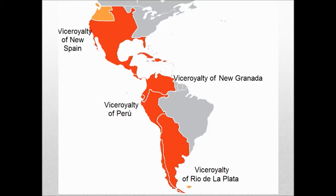The vice royalty of Peru once encompassed most of Spanish-held South America, but it was later subdivided in the 18th century into two additional vice royalties. The vice royalty of Peru corresponded roughly with the modern-day nation-states of Peru, Bolivia, and part of Ecuador. The vice royalty of New Granada corresponded mainly to modern-day Colombia, Ecuador, Panama, and Venezuela. The vice royalty of the Río de la Plata corresponded to modern-day Paraguay, Uruguay, and Argentina.